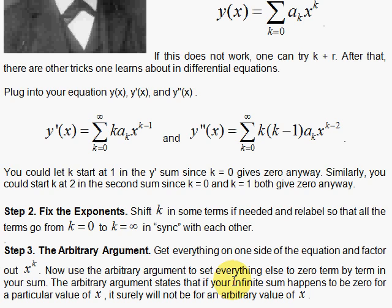you cannot count on it being 0 because x happens to conspire to be a value that makes it true, because x is arbitrary - you can pick x to be whatever you want. It's a variable, therefore, to make it vanish all the time, what's in parentheses is 0.